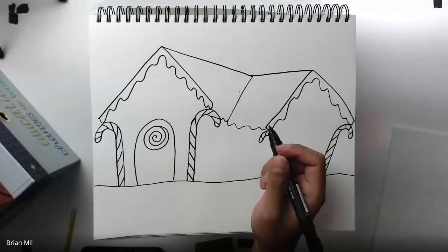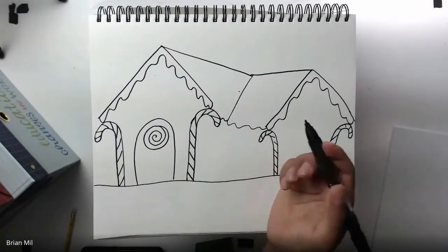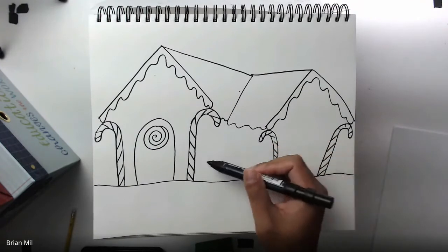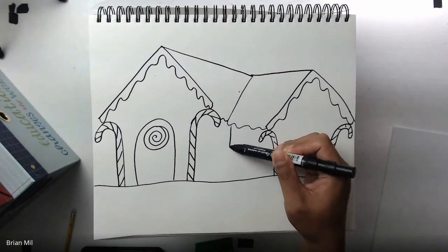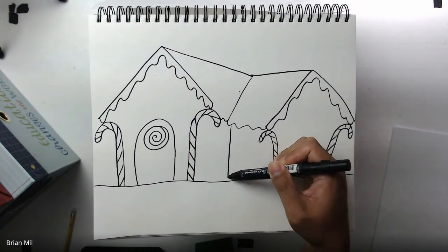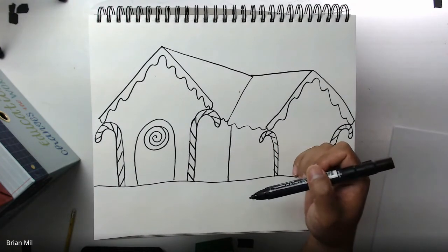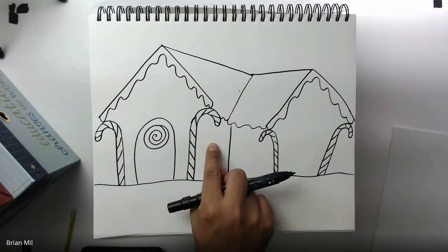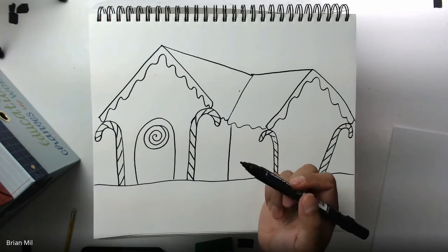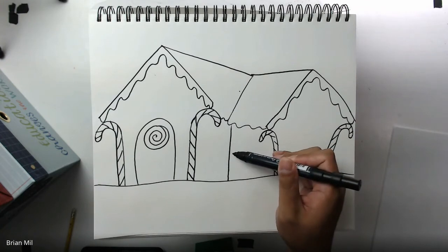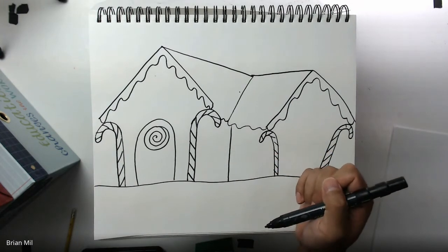There is one more vertical line I forgot, and it's the one right in between these two candy canes right here. The reason why we need a vertical line is to show that the house is an L-shape. That way, this wall is facing that way, and then this wall is facing towards us, kind of. I forgot about that vertical line. That vertical line is nice and important.